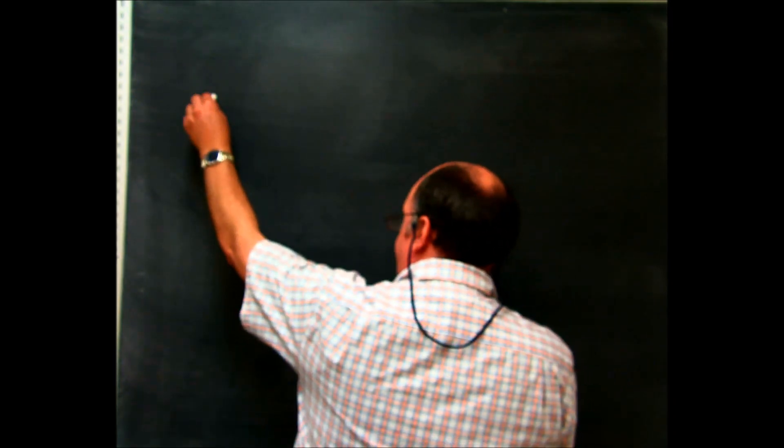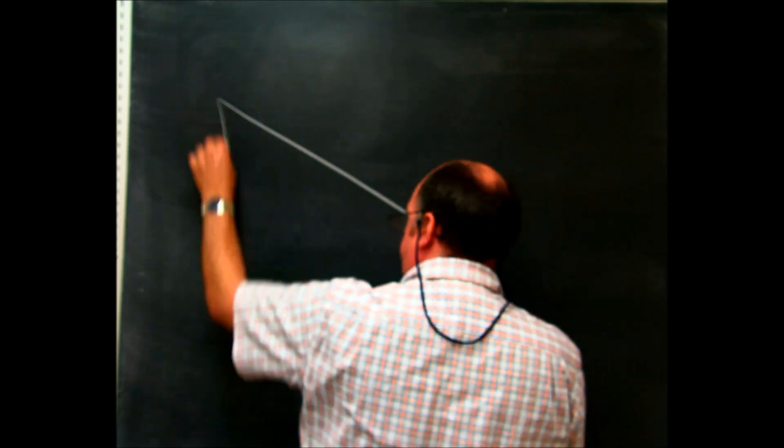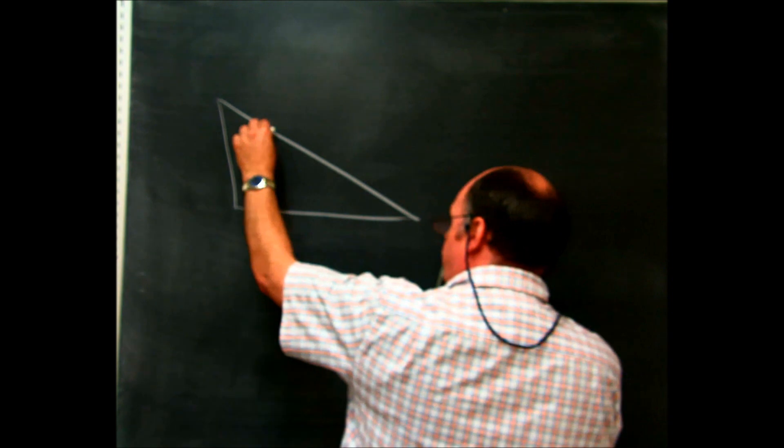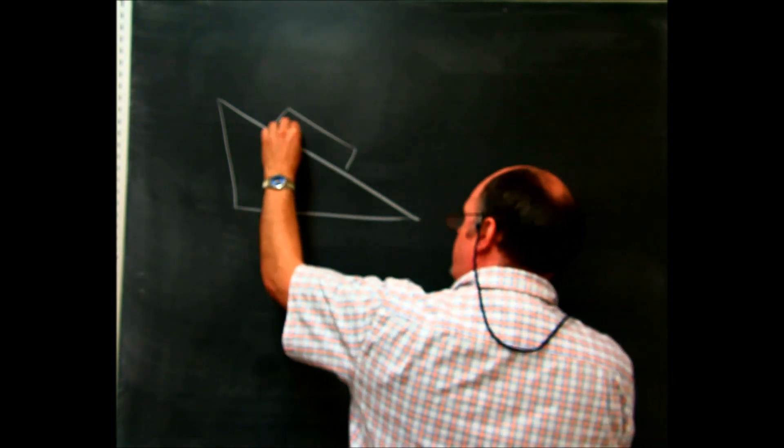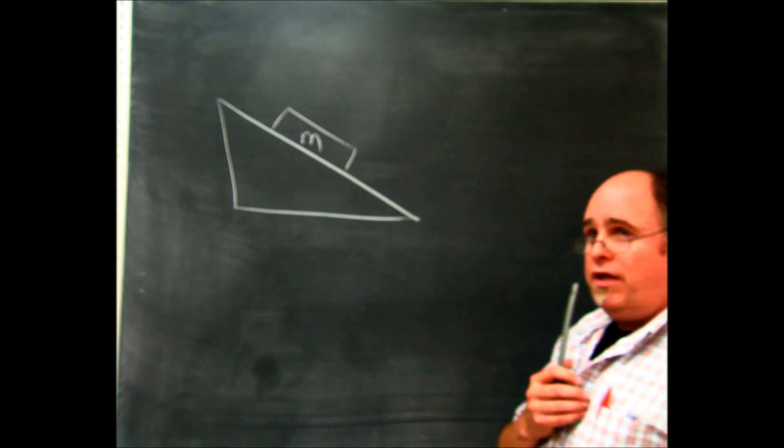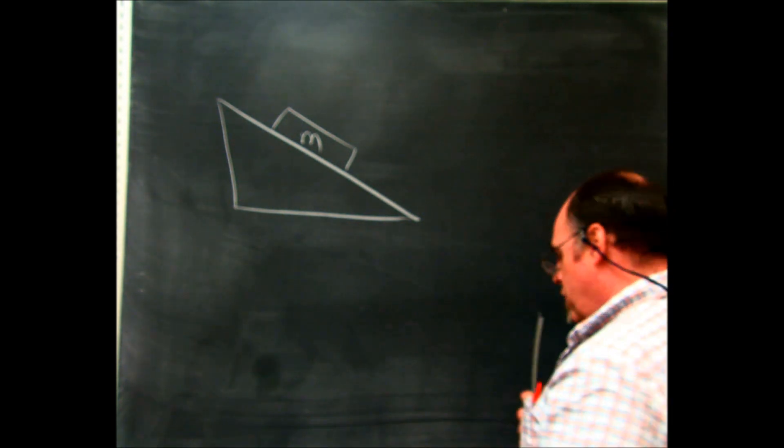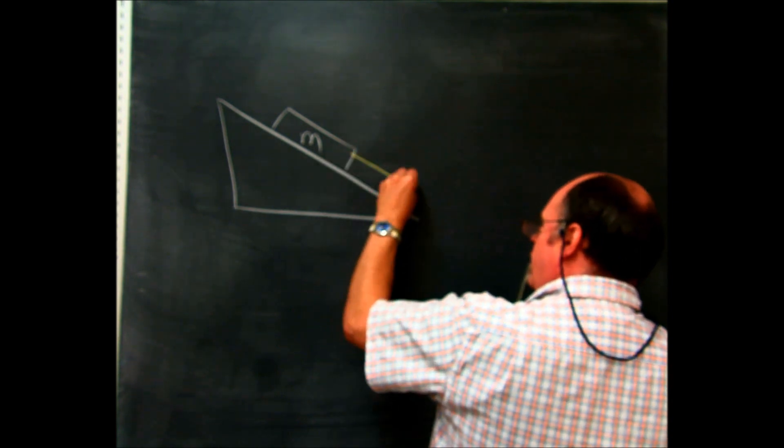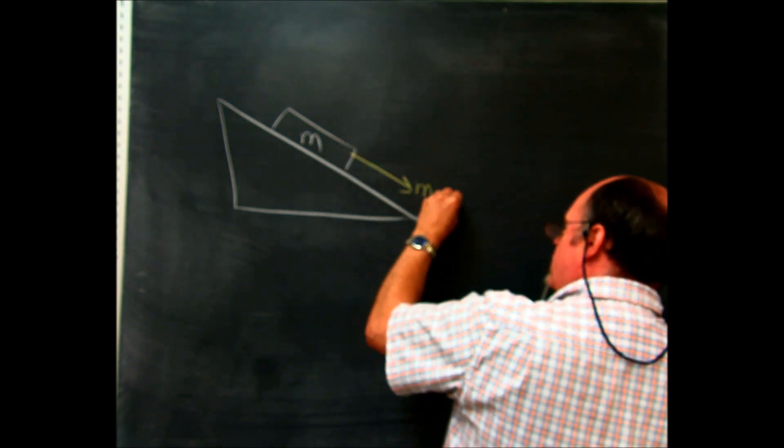So what we had was we had a ramp, and we had a sled or a box on the ramp, and this sled was just mass m. So we've talked about it in class, how would we break this thing up into two different vectors. Well, one of the things I would do is I would say there's a force going parallel to the hill which was mg sine of the angle.